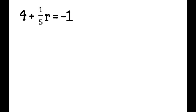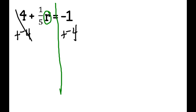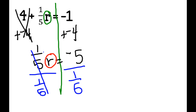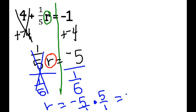This is going to get a little trickier. I draw my line and circle my variable. 4 is being added to r, so I add a negative 4 to both sides. Those cancel out, leaving (1/5)r = -5. To move the 1/5 being multiplied by r, I divide by 1/5 — which means I keep, flip, change. So r equals negative 5 over 1 times 5 over 1. Negative 5 times 5 is negative 25, so r equals negative 25.